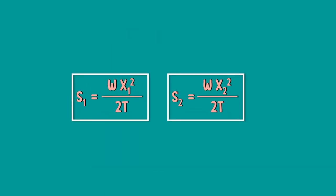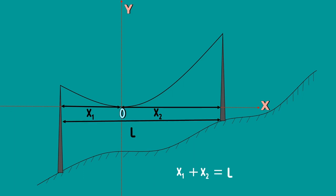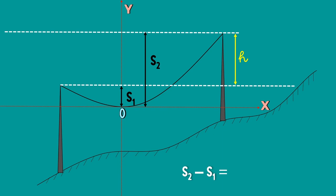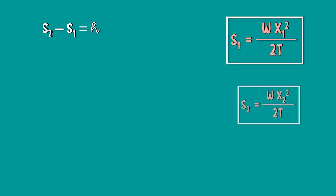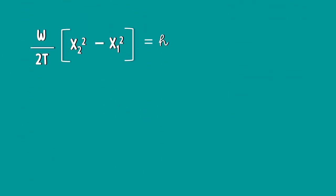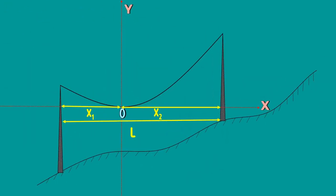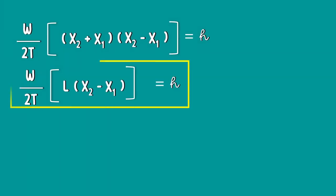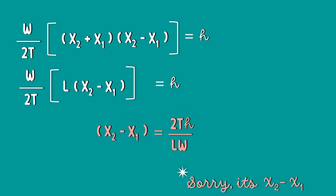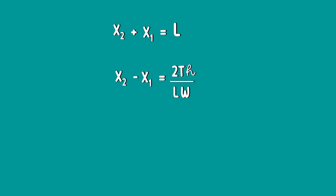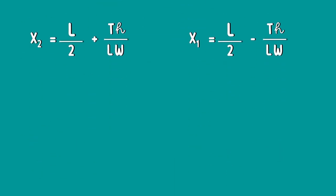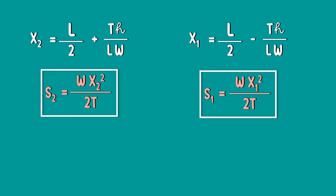In these two sag equations, the values X1 and X2 are unknown. We need these two values to find the exact value of the sags. We know that X1 plus X2 is the span L and S2 minus S1 is the difference in levels between two supports H. Let's substitute our S1 and S2 values in this equation. We know that X2 square minus X1 square can be written as X2 plus X1 into X2 minus X1. By substituting the X2 plus X1 value as L, we will get our equation for H. From here, we can find X2 minus X1. Now we have X2 plus X1 equation and X2 minus X1 equation. We can get our X2 and X1 values by solving these two equations. Once you know these values, the sags S1 and S2 can be calculated easily.